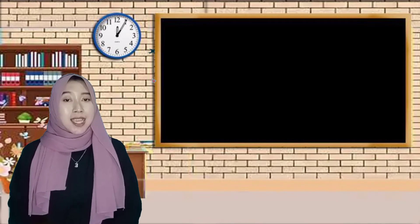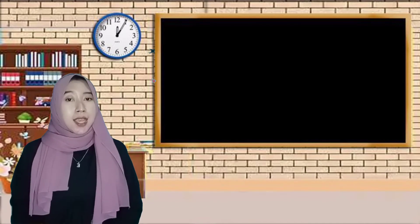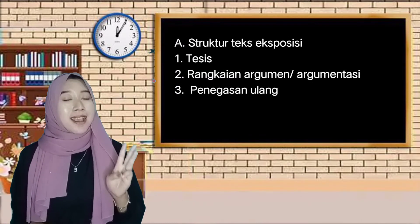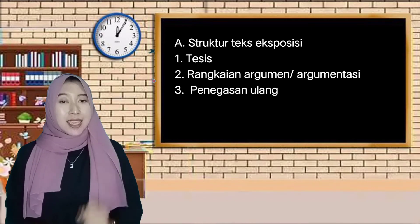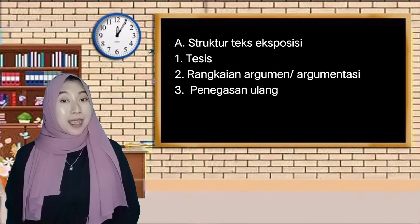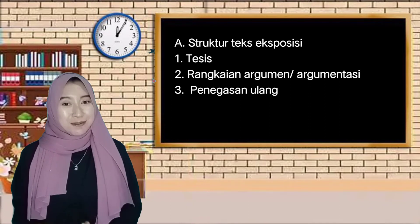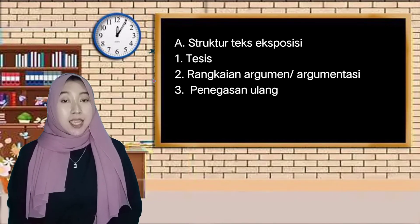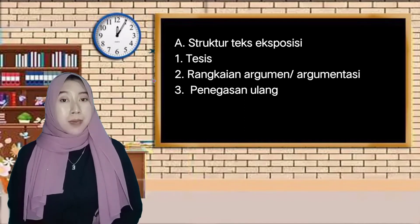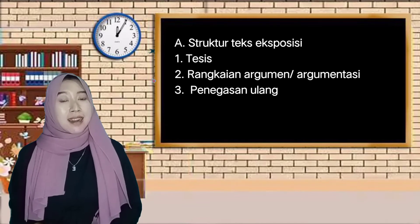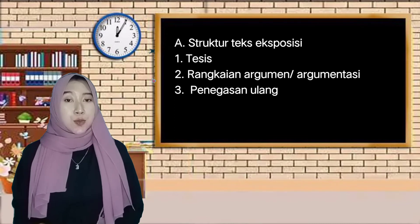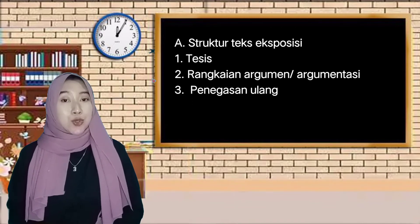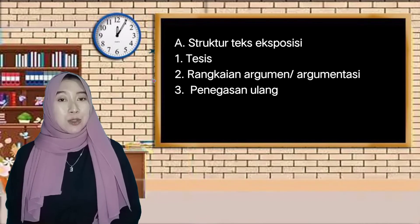Dalam teks eksposisi ini tentunya dibangun oleh struktur. Dalam struktur teks eksposisi ini ada 3 macam: yang pertama ada tesis, kemudian ada rangkaian argumen atau argumentasi, dan yang ketiga ada penegasan ulang. Tesis merupakan bagian awal atau bagian pembuka dari teks eksposisi. Isi dari tesis adalah untuk menyajikan, memaparkan, dan mengenalkan isu, topik, serta permasalahan yang diangkat dalam teks. Tesis ini disebut juga sebagai awal dari pernyataan pendapat. Dalam menulis teks eksposisi, harus ditentukan dulu tujuannya, dan tujuan itulah yang akan dicantumkan dalam bagian tesis.